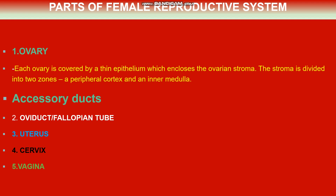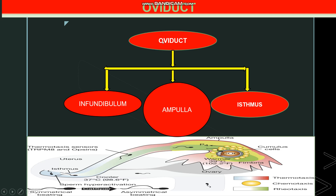The accessory ducts include the oviduct or fallopian tube, uterus, cervix, and vagina. The oviduct, otherwise called the fallopian tube, consists of three distinct regions. The first is the infundibulum, which has finger-like projections called fimbriae that help collect the ovum after ovulation. The infundibulum leads into the ampulla, which is a swollen region, and this is followed by the isthmus.